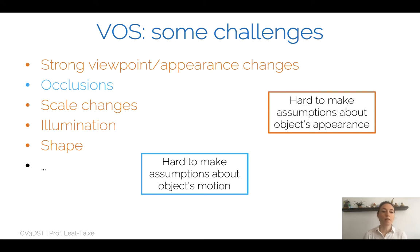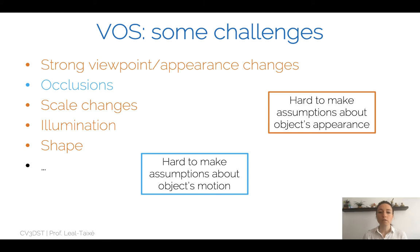Overall, we have several problems that make it hard to make assumptions about object appearance: strong viewpoint changes, scale changes, illumination changes, and shape changes. Occlusions make it hard to make assumptions about the object's motion. As we have seen in multiple object tracking, we usually deal with two types of assumptions — either we work on object motion (constant or smooth motion), or we work on learning an object's appearance. All of these challenges are what make VOS such an interesting problem.